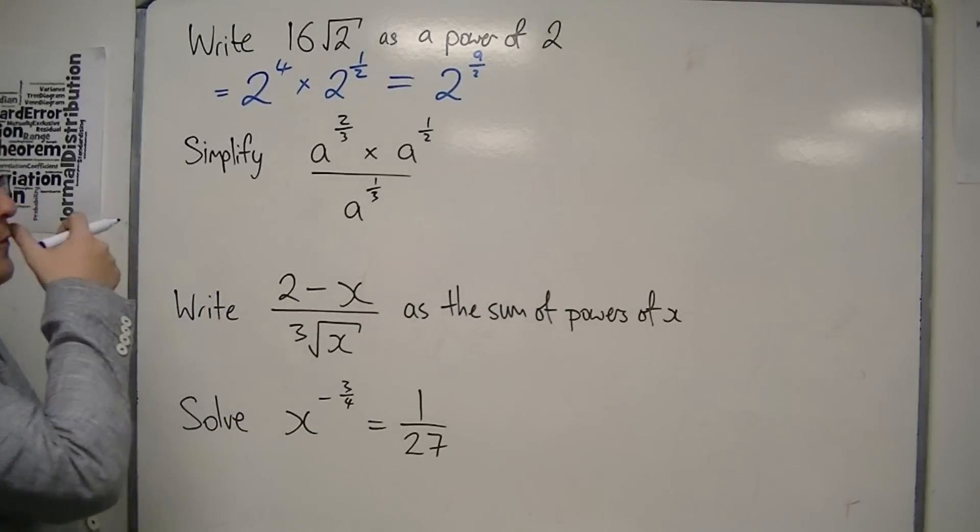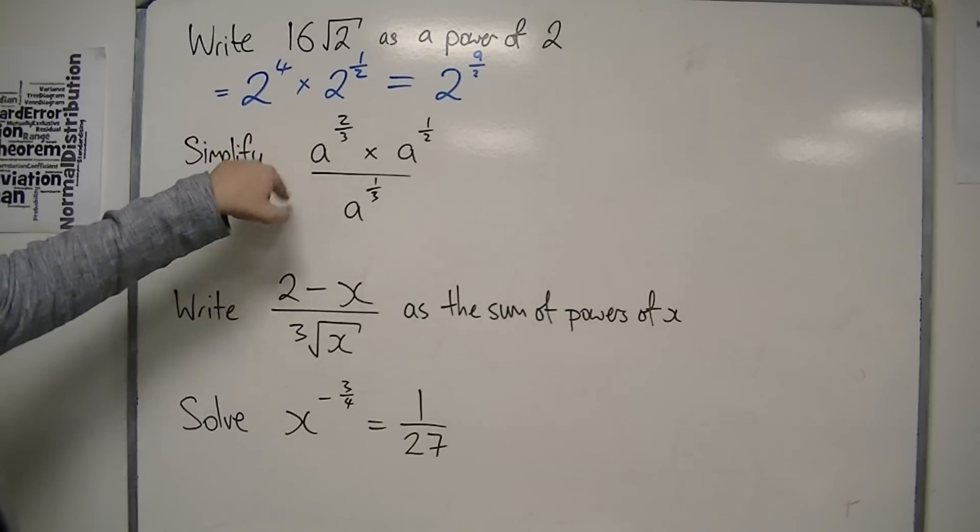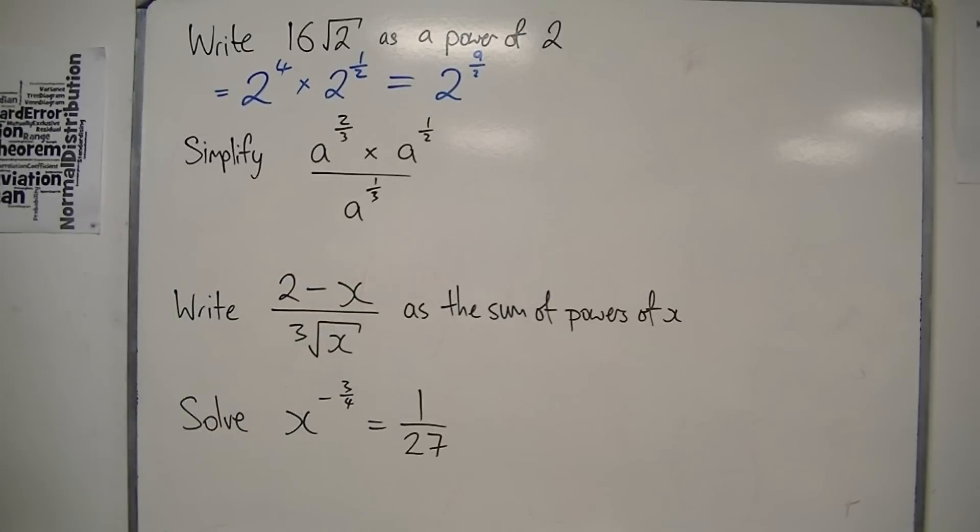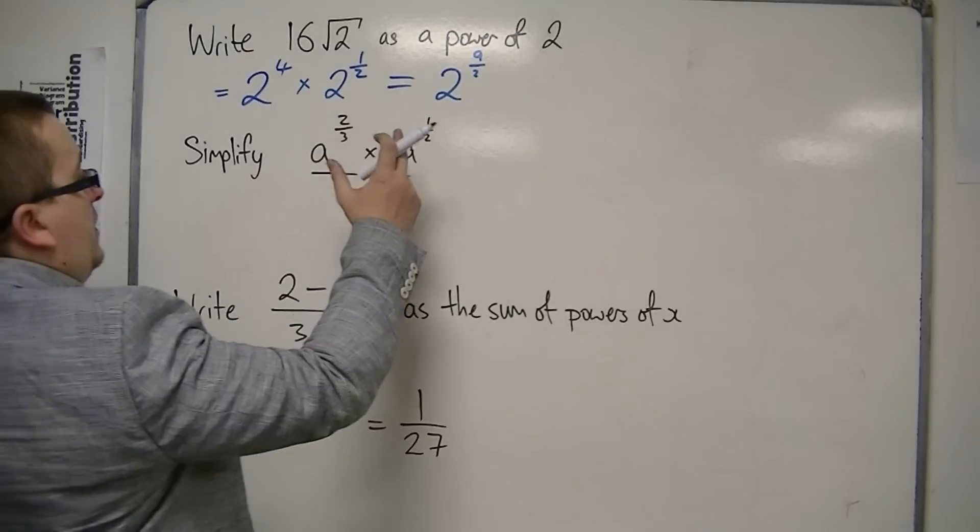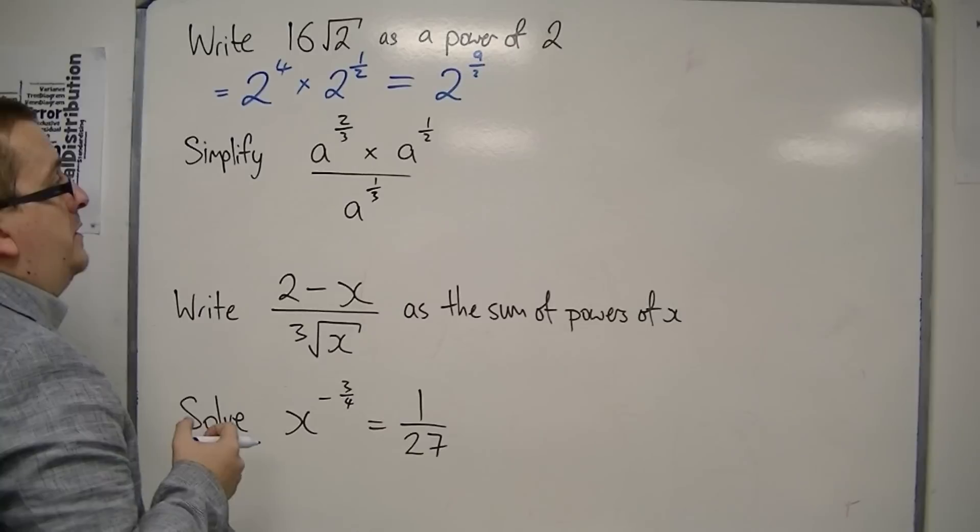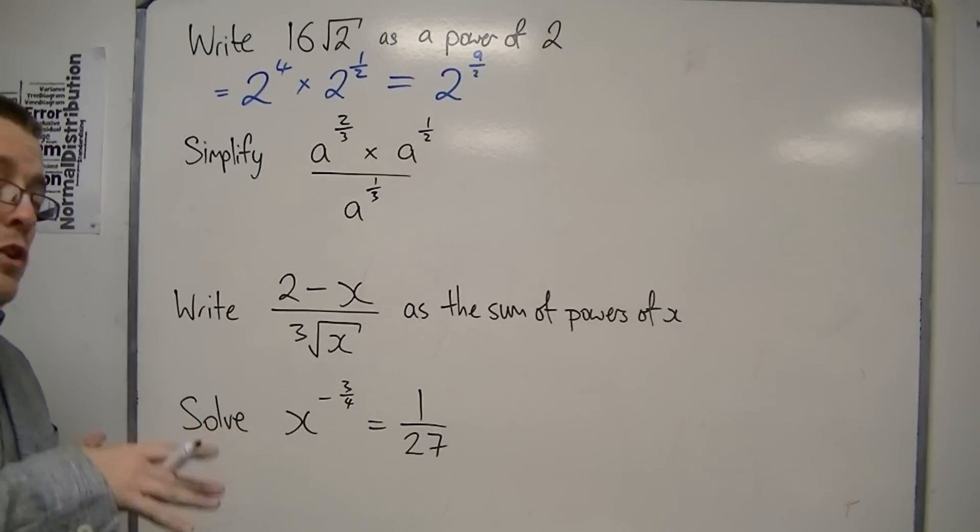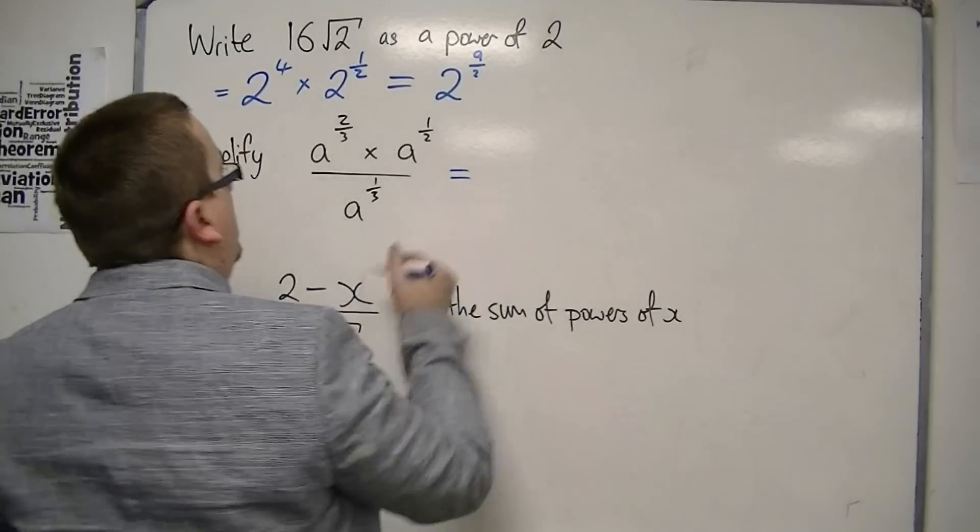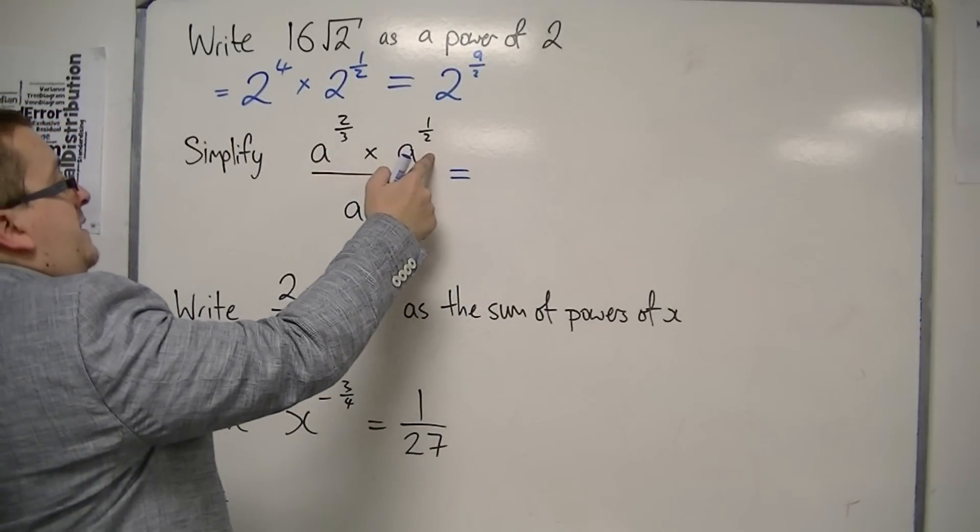In this second one we've got to simplify this expression involving a. a to the 2/3 times a to the 1/2 divided by a to the third. First of all, deal with the numerator.